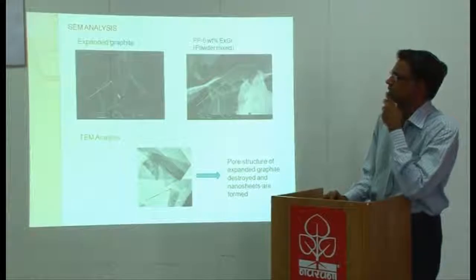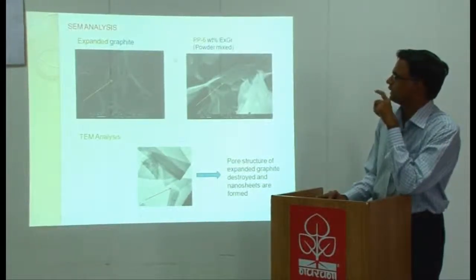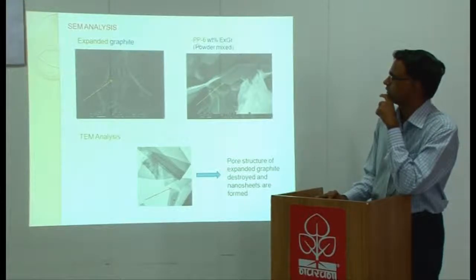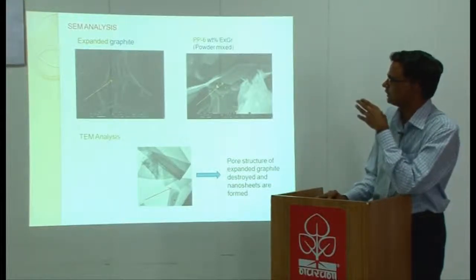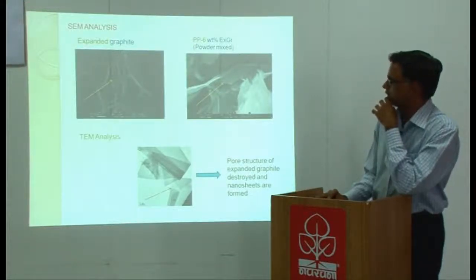As I told you earlier, this is the porous structure of expanded graphite. Just sonicate expanded graphite in acetone and take the cross section. You can see still nanosheet but it is more than 300 nanometer and I would say this is agglomeration of nanosheets.